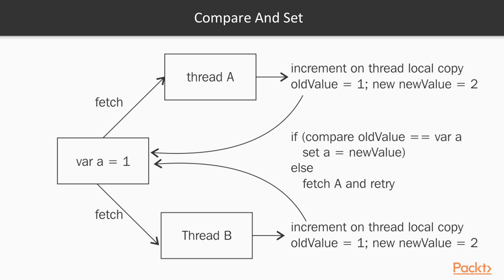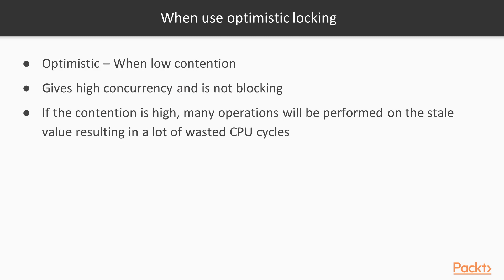If Thread A wins, variable A will be equal to 2, and Thread B needs to fetch that 2 again — so old value will be 2 and the incremented value will be 3. Optimistic locking should be used when there is low contention, and it gives high concurrency and is non-blocking. If contention is high, many operations will be performed on stale values, resulting in a lot of wasted CPU cycles due to retries.